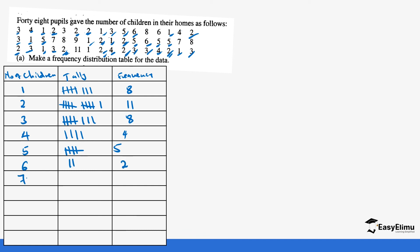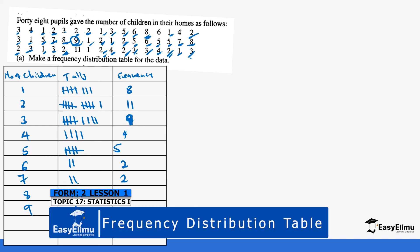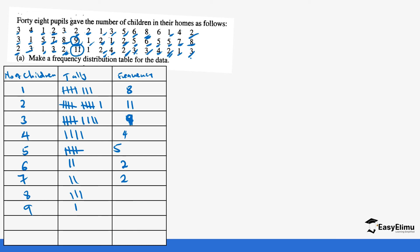Those who had seven children: there are two. Those who had eight children: counting carefully gives us three. Let's verify the eight count: one, two, three, four, five, six, seven, eight, nine — so we correct that to nine. Those who had nine children: just one person. We don't have ten or twelve, but we do have eleven, and eleven occurs once.